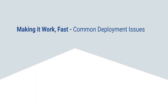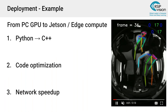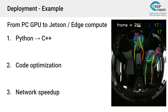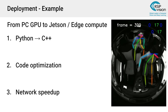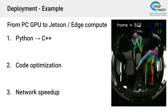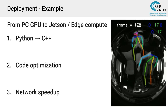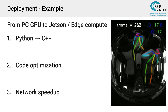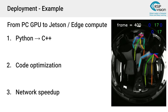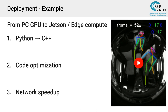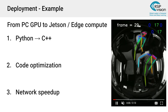Sometimes you also need to make your solution run fast. For example, state-of-the-art pose estimation like OpenPose runs heavily. You may not have a strong PC with a GPU — you might have lower-power, lower-cost hardware such as the NVIDIA Jetson or some edge compute device. We'll cover three main ways to make things run faster: moving from Python to C++, code optimization, and network speedup.